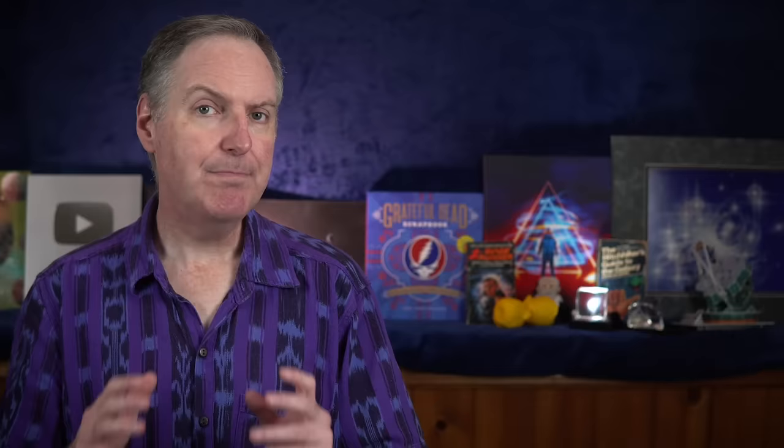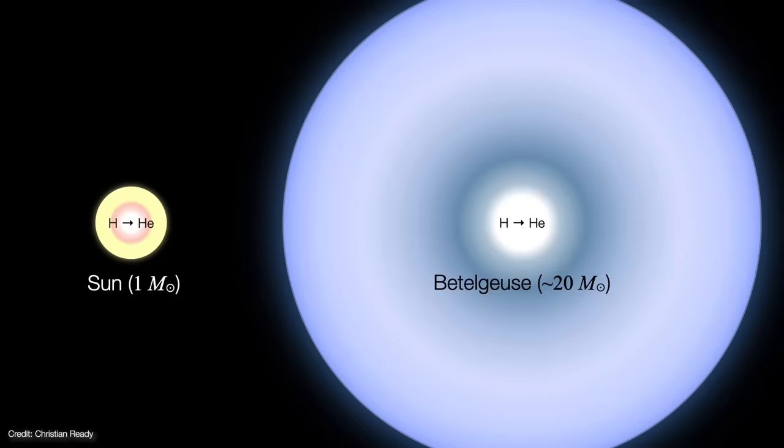Massive stars like Betelgeuse evolve rapidly because they burn through their fuel much hotter than the Sun does. As a result, it consumes that fuel much faster. So while our Sun might spend its first 10 billion years of its life fusing hydrogen into helium, Betelgeuse fused its core hydrogen in less than 10 million years.